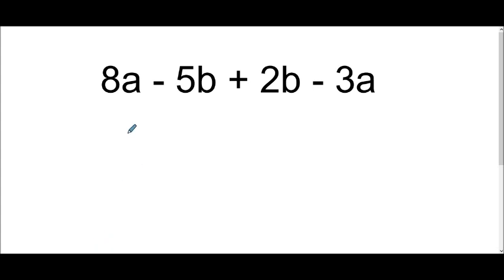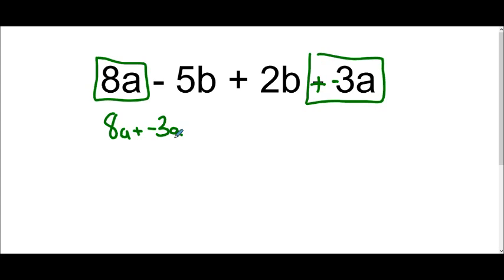In this example, we have four terms and two variables. We have a and we have b. Let's start by taking all of our terms that have the variable a. And notice here that this 3 is actually a negative. You can do a state change change to make that plus a negative 3. So I have 8a plus negative 3a. And if I add those coefficients together, 8 and negative 3 make 5, and I leave the variable a.